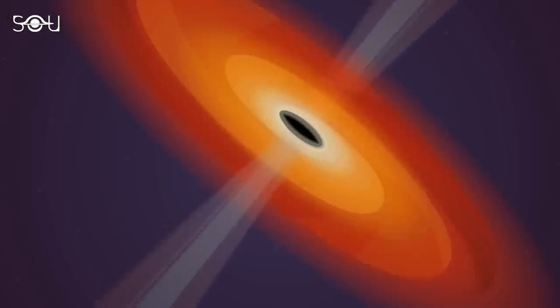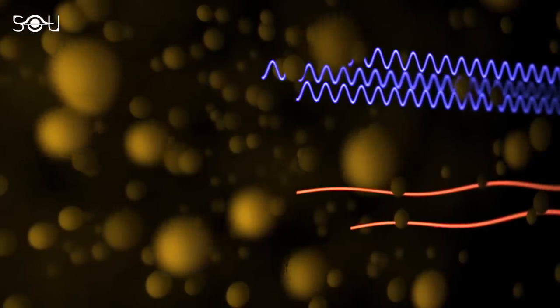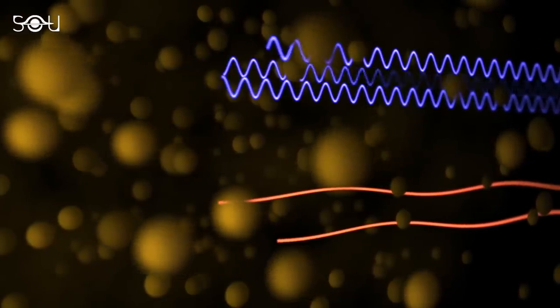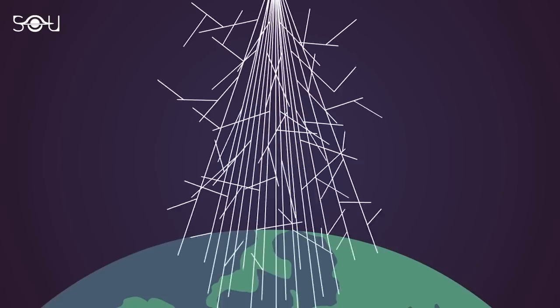One intriguing process that can generate both gamma rays and high-energy neutrinos within our galaxy occurs when cosmic rays collide with the dust and gas present in the interstellar space. Let's take a closer look at how this fascinating phenomenon unfolds.